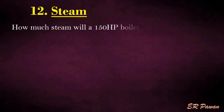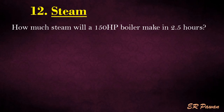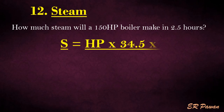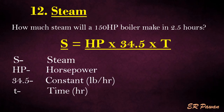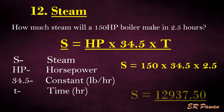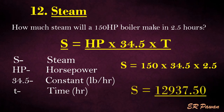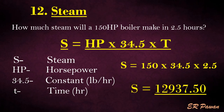Formula 12 — Steam. How much steam will a 150 HP boiler make in 2.5 hours? Steam equals horsepower multiplied by 34.5 multiplied by time, where 34.5 is a constant. Let's put the value in the formula.